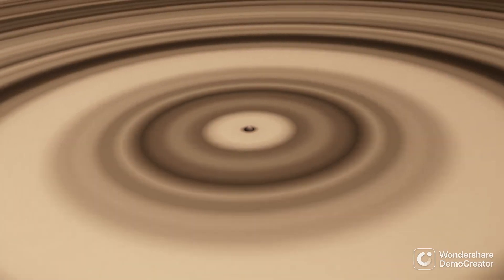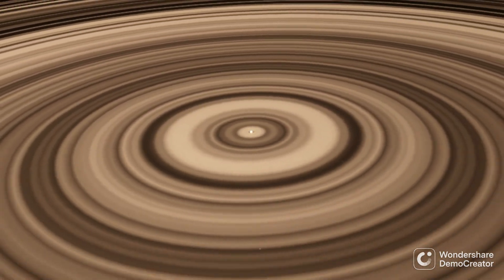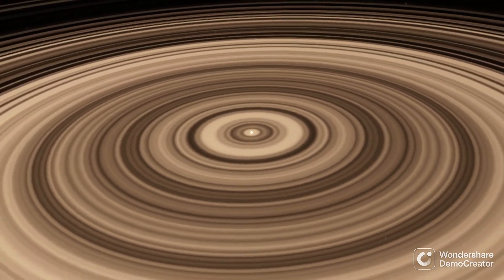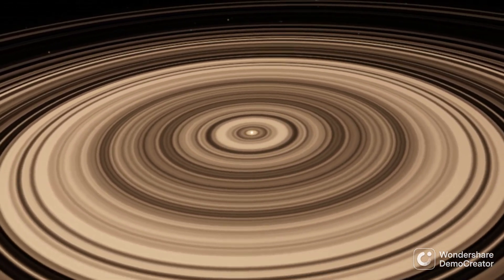However, the dimming didn't stop there, as ahead and behind of J1407b were smaller dips that aligned with the planet. This could only be explained by the presence of a gigantic ring system, and so J1407b became the first planet to have rings confirmed by the transit method.